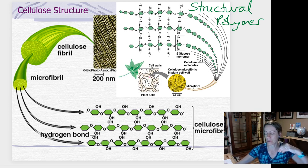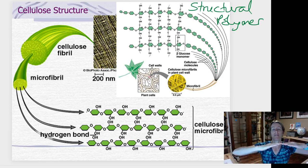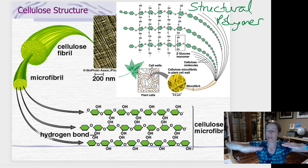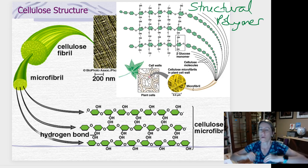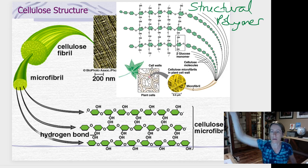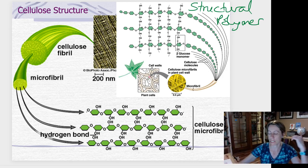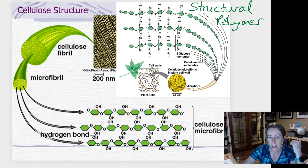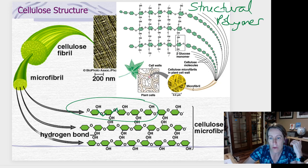In cellulose, the glucoses are alternately flipped. So one's like this and one's like that. And the next one's like this and the next one's like that, which means that when they hold hands or when they link up, one is down and the next one is up and the next one holds hands down and the next one holds hands up. So there's a different arrangement down the chain. And you can see that here, here's holding hands down and then holding hands up and then down and then up.